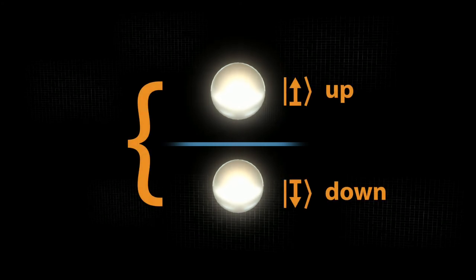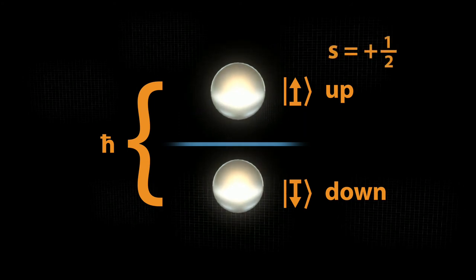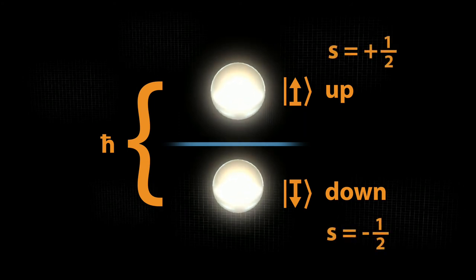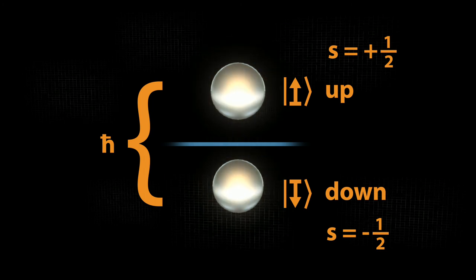In this projection, the spin up state is an exact mirror image of the spin down state. The distance between the states is specified by h-bar. The distance to the mirror plane is thus s equals plus one-half and s equals minus one-half respectively in h-bar units.